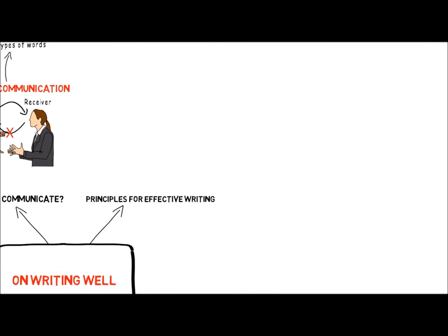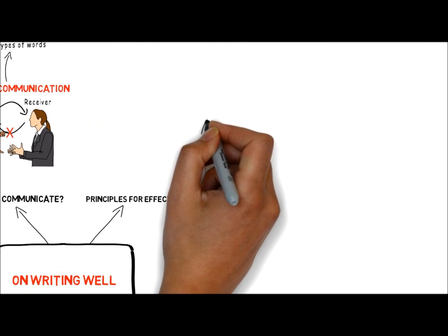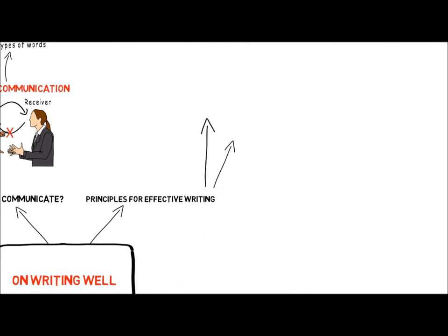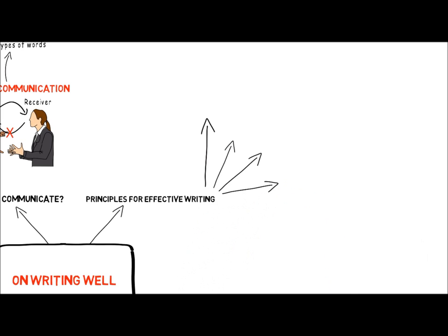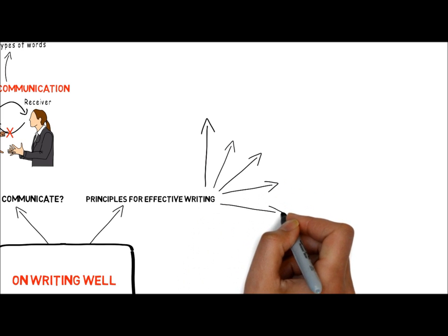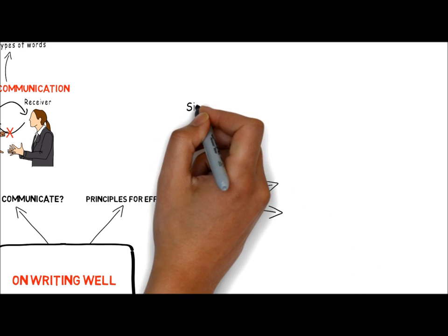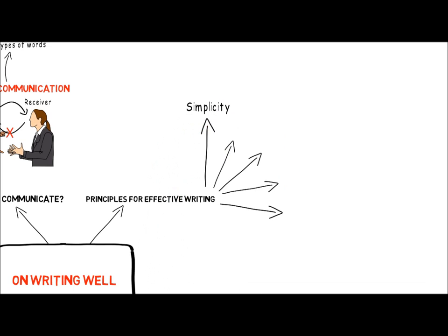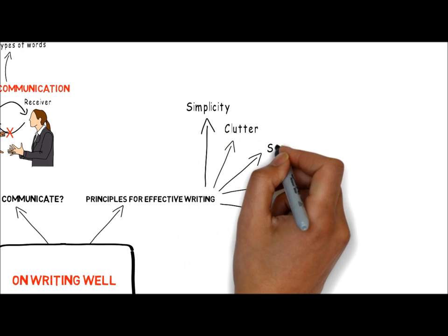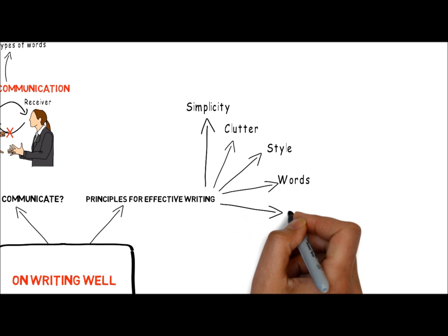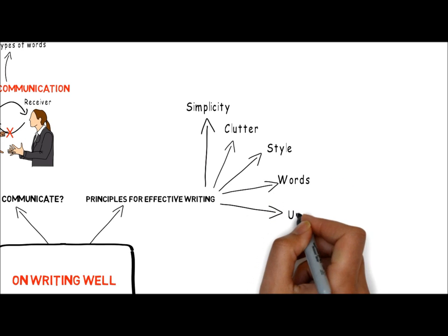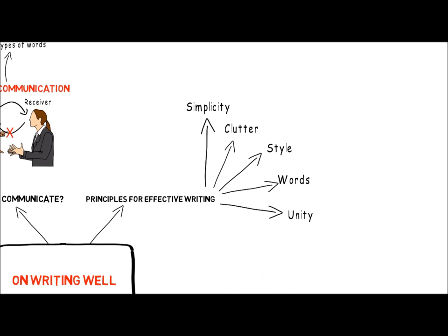Zinser's book 'On Writing Well' identifies five broad principles that we need to consider in order to write effectively. They are simplicity, clutter, style, words, and unity. We will look at each of these in turn.